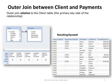On the other hand, with an outer join, it will display all the records from one table and only the matching records from the other table. Here we have an outer join relative to the client table, meaning we will display all the records from the client table and only matching records from the payments table.